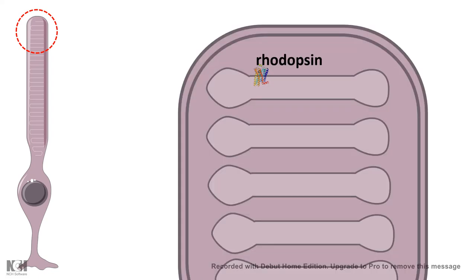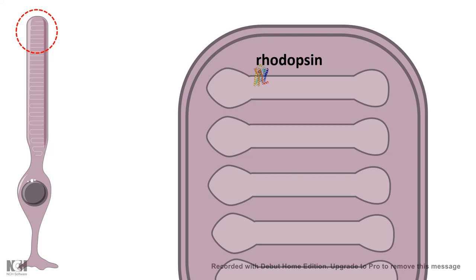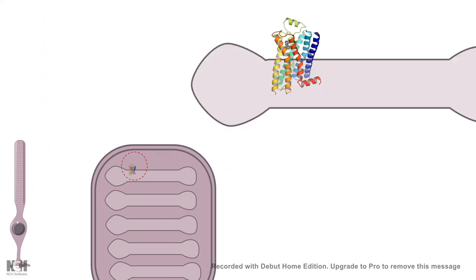In rhodopsin, there are specific pockets and in these pockets of the rhodopsin, you can find a molecule known as retinal.